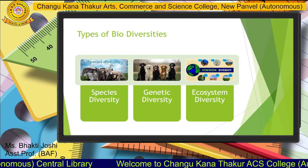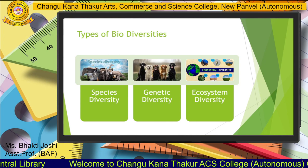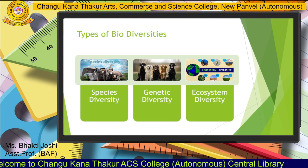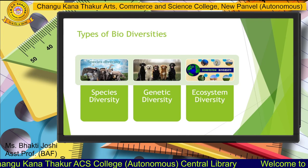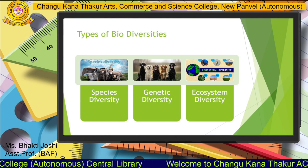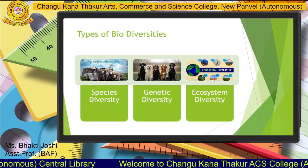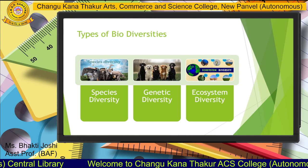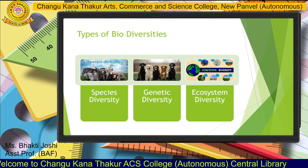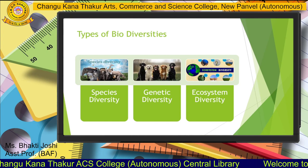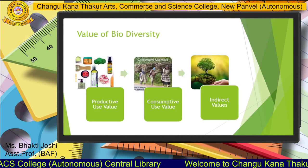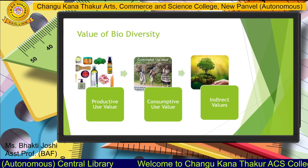Ecosystem diversity refers to the various types of ecosystems — aquatic ecosystems, forest ecosystems, and variations due to topography, climate, and soil. Examples of ecosystem diversity include grasslands, forests, deserts, and aquatic ecosystems such as freshwater and saline water. Next, we will see the values of biodiversity — the benefits we get from nature.